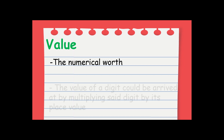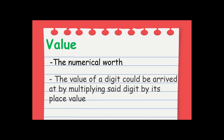Now let's move on to value. What does value mean? When we say value, it is the numerical worth — the worth of that digit depending on its position. The value of a digit can be arrived at by multiplying the said digit by its place value. We multiply the digit and its place value to get the value.